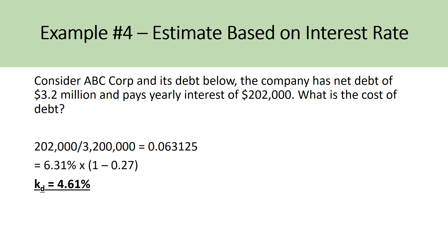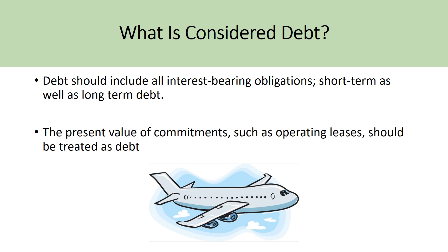If a company has issued one bond and also has some bank debt, first consider the bond and look at its yield to maturity — what the market is currently valuing that debt at — because that gives a much more accurate perspective of the company's cost of debt. Also note that debt should include all interest-bearing obligations, short-term as well as long-term. It should also include the present value of commitments such as operating leases. For example, if you're looking at an airline company that leases out their planes, only including long-term and short-term debt would inaccurately display the company's existing market value of debt — you'd have to capitalize the company's operating lease and account for that as debt. So when calculating the market value of debt, it's important to also consider the present value of commitments such as operating leases.